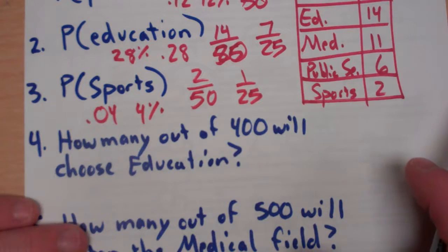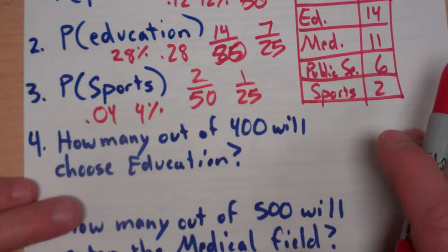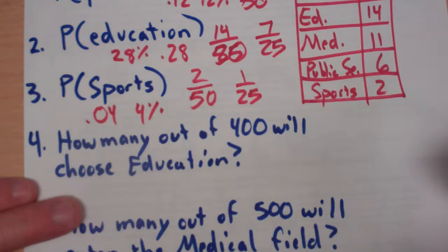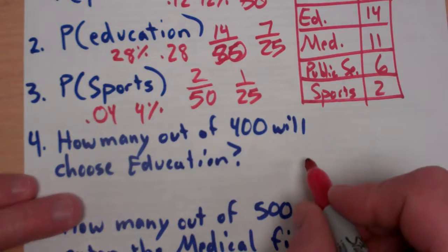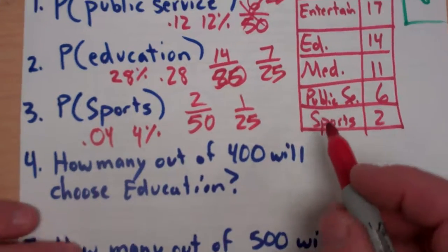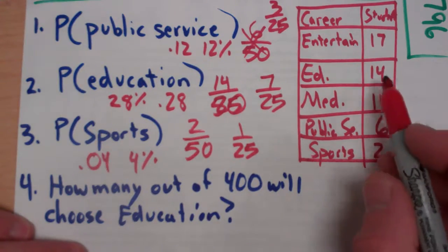Now, number 4 is where I really like the power of this, being able to extend it to the entire population. So, how many out of 400 will choose education? Well, here's what I know about education so far is if I go back to education, that was 14 out of 50.